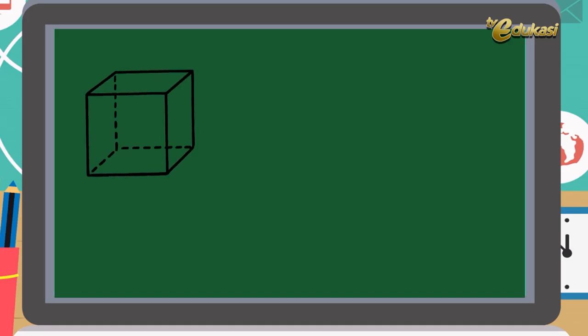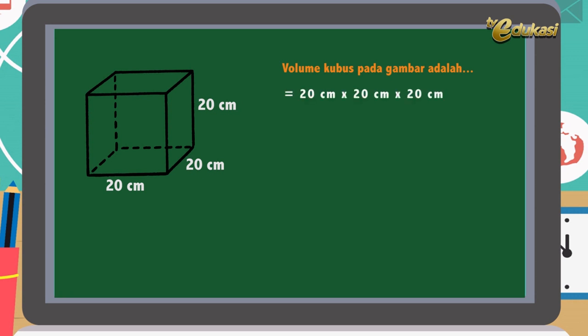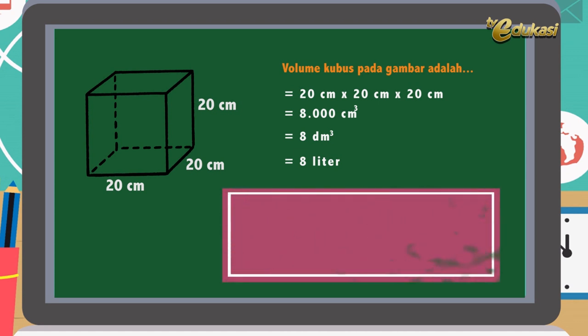Baik anak-anak, kita akan membahas pemahaman konsep dalam satuan volume. Perhatikan gambar berikut. Di sini ada kubus yang panjang rusuknya 20 cm, 20 cm, dan 20 cm. Berarti volume kubusnya adalah 20 cm × 20 cm × 20 cm, atau 8.000 cm³. Atau bisa kita tuliskan juga 8 desimeter kubik, atau bisa kita tuliskan menjadi 8 liter.